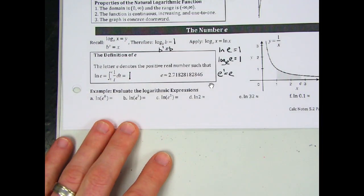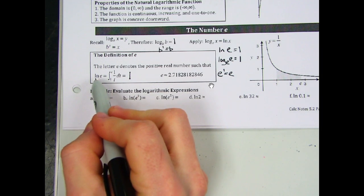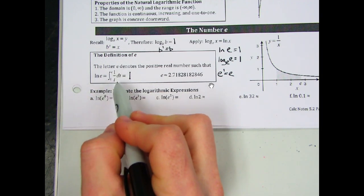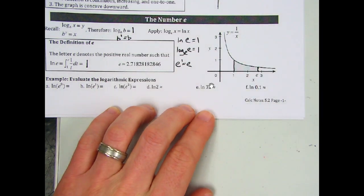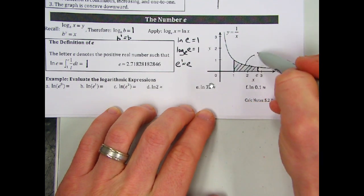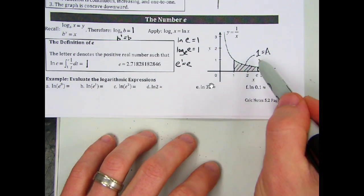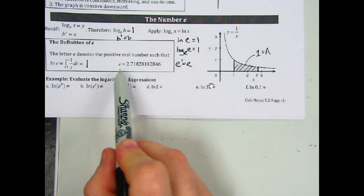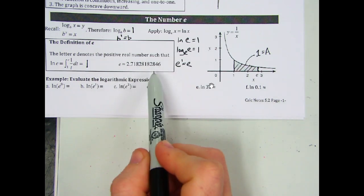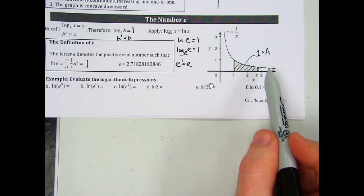So natural log of e equals 1, meaning the integral from 1 to e of 1 over t dt equals 1. The number e is that x value such that the area under the curve of 1 over x equals exactly 1 square unit. That's what e really is — e equals approximately 2.718 — and it's the only number for which the area from 1 to e under 1 over x equals 1.